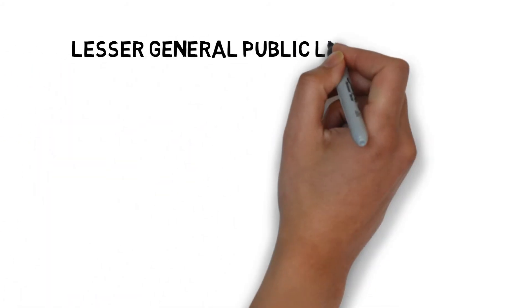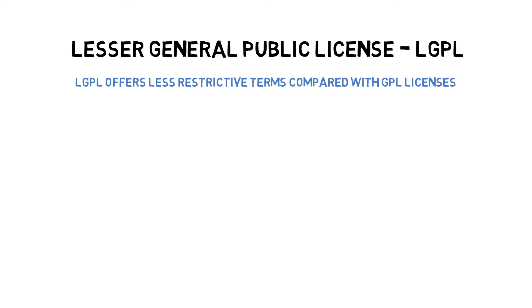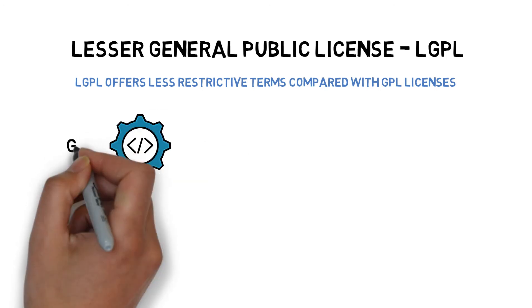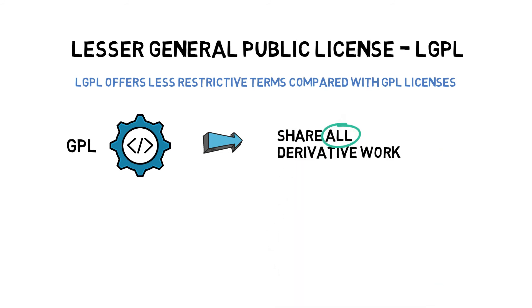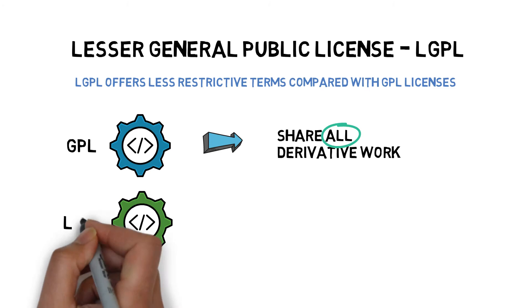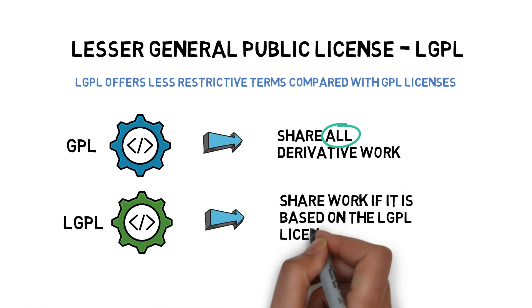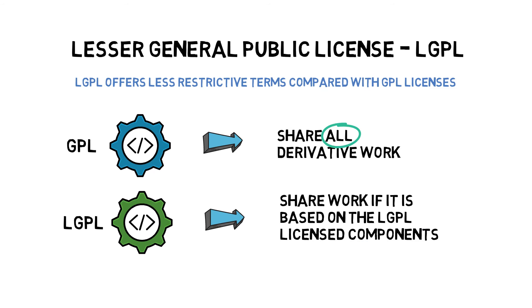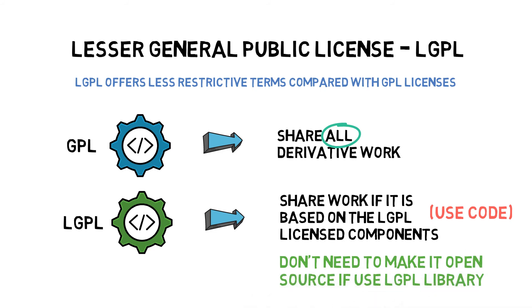The Lesser General Public License, referred to as LGPL, offers less restrictive terms compared with GPL licenses. GPL requires developers to share all derivative work no matter what the usage is. In comparison, LGPL only requires authors to share work based on the LGPL-licensed components. If the author only uses the LGPL components — for example, an LGPL library — then they don't need to make it open-source.